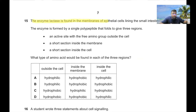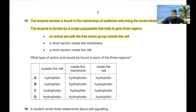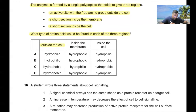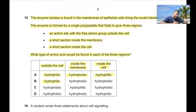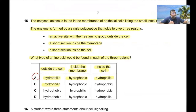Question 15: The enzyme lactase is found in epithelial cell membranes, with an active site outside the cell, a section inside the membrane, and a section inside the cell. Outside the cell should be hydrophilic; inside the membrane should be hydrophobic as it interacts with the phospholipid bilayer; inside the cell should again be hydrophilic. So option A is the correct answer.